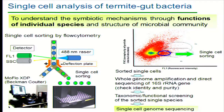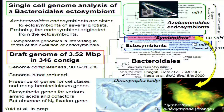In this complex community, the single-cell approach is more advantageous for obtaining genome sequence data. We applied flow cytometry to isolate single cells. After amplification, we checked the phylogenetic identity and purity, and then submitted for genome sequencing. I would like to show one example of single-cell genome analysis.